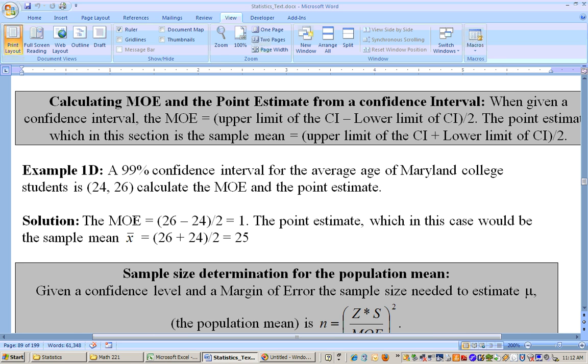You can find those by either subtracting or adding the two endpoints together. For example, this problem here says a 99% confidence interval for the average age of Maryland college students is somewhere between 24 to 26.